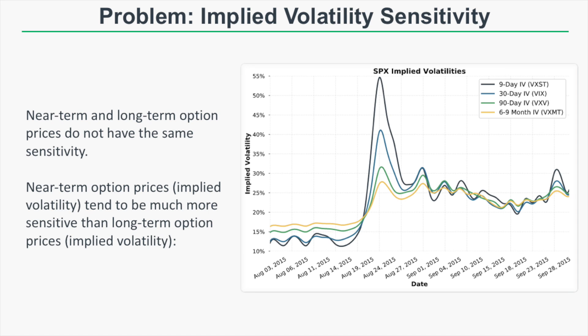What this means for a long calendar spread is that the short option might increase in price faster than the long option, meaning an implied volatility increase could actually lead to losses. Conversely, in a high implied volatility environment, if the short option decreases in value faster than the long option, you can actually make money from implied volatility contraction. We'll look at examples of both scenarios.